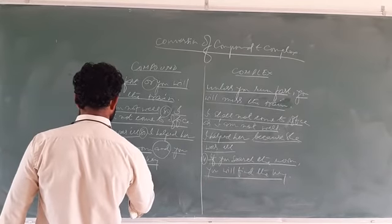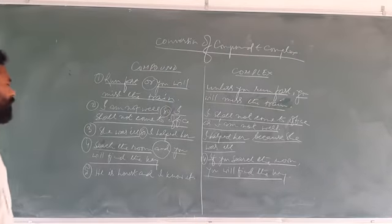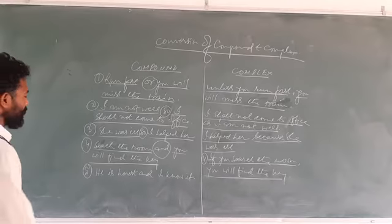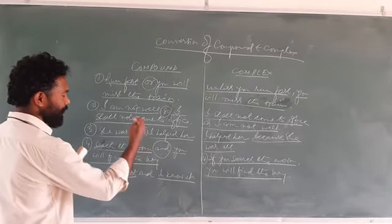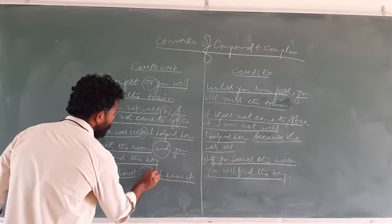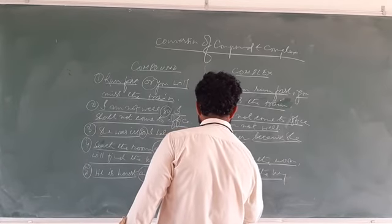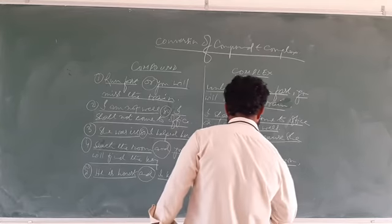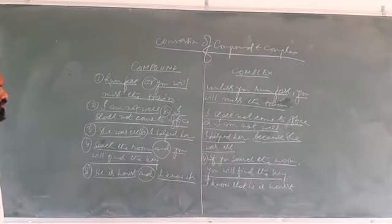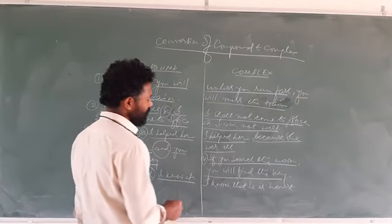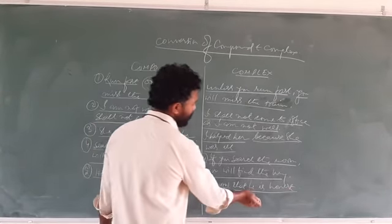The final example in this section: The compound sentence is 'He is honest and I know it.' This is a compound sentence because there are two independent clauses — 'he is honest' and 'I know it' — both making complete sense, connected by the coordinating conjunction 'and'. We change this into the complex sentence: 'I know that he is honest.' Here 'I know' is the principal clause and 'that he is honest' is the subordinate clause — it is a noun clause.